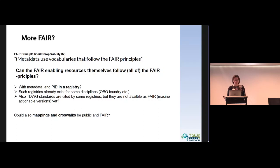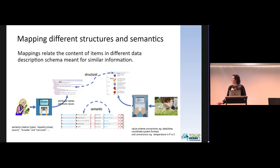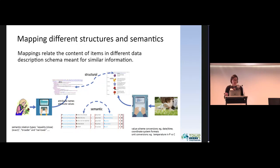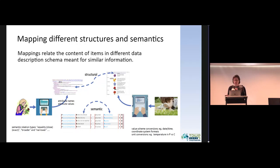But could mappings and crosswalks also be public and FAIR? This is a question that FairCore for EOSC tries to create one possible solution for. Mappings relate the content of items in different data description schemas meant for similar kinds of information — these are structural mappings that can be done between schemas. There are also semantic mappings with different kinds of relation types: equality, close or exact matches, broader or narrower comparisons, as well as value conversions between schemes or ontology models, such as dates, times, coordinate systems, or unit conversions.